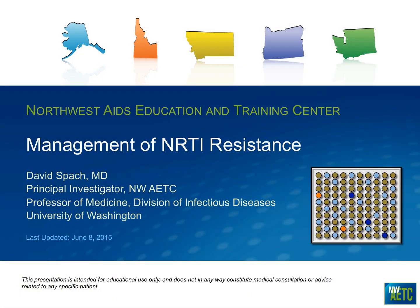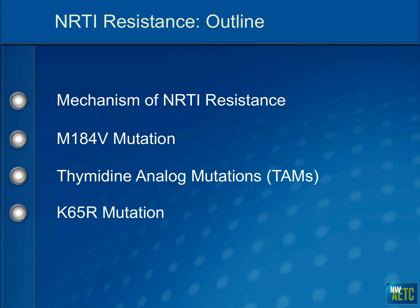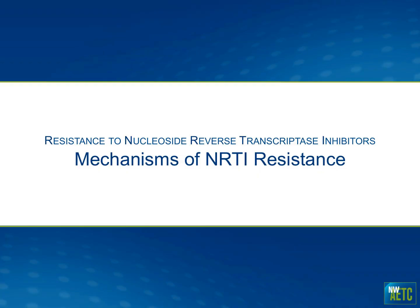Welcome to the NWAETC Project ECHO. I'm Kent Unruh. Today we're going to talk about the management of nucleoside reverse transcriptase inhibitor resistance, focusing on four areas: the mechanism of NRTI resistance, and the three most clinically relevant issues — the M184V mutation, thymidine analog mutations or TAMs, and the K65R mutation.